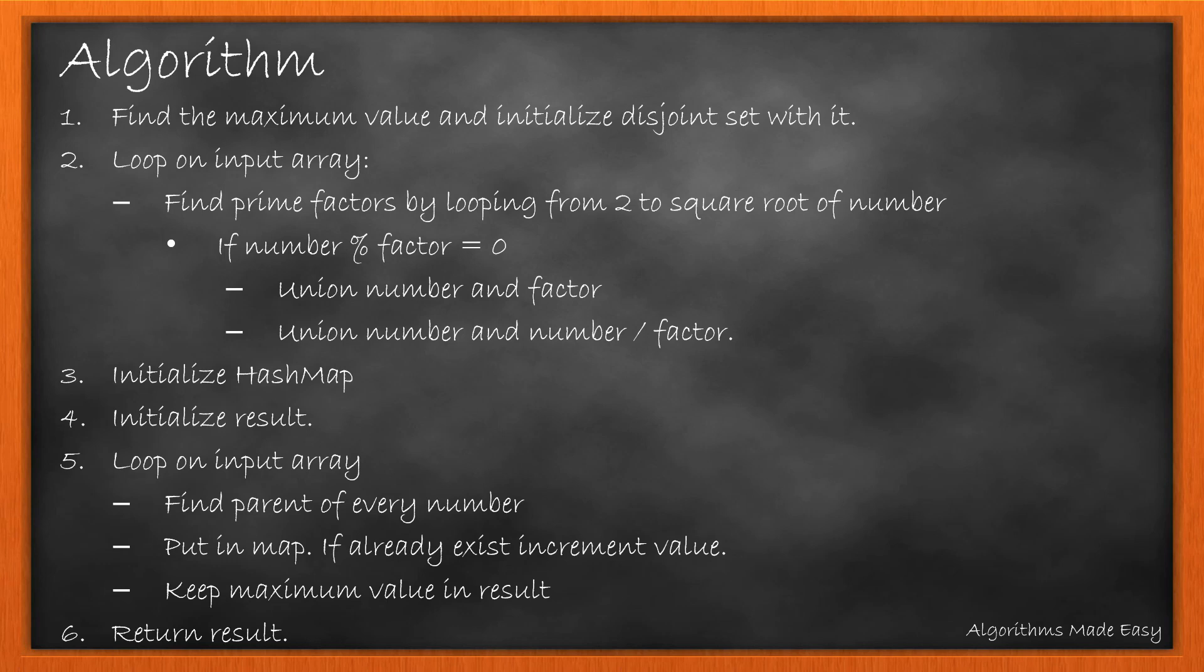For every value, we find its parent by calling the find method of the disjoint set. We put value in the map and if it already exists, then increment the value against the parent key. Also, we keep track of the maximum value in the result. And at the end, we return result.